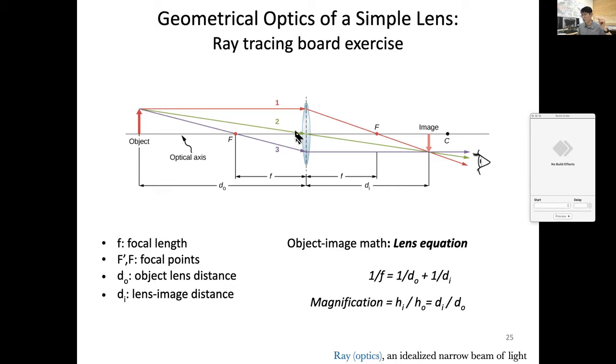So it just goes through and it keeps going, and at some point because this ray has bended further and this didn't bend, they will meet at some point. In fact, this is the point where image will become forming.